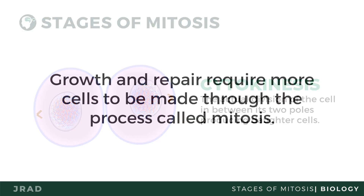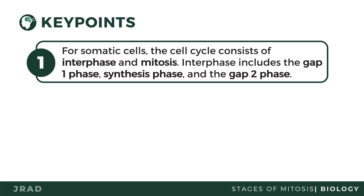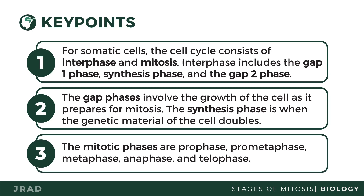Understanding mitosis means understanding how growth and repair happen, because these processes require more cells to be made. For somatic cells, the cell cycle consists of interphase and mitosis. Interphase includes the G1 phase, Synthesis phase, and G2 phase. The G phases involve cell growth in preparation for mitosis; the S phase is when genetic material doubles. The mitotic phases are Prophase, Metaphase, Anaphase, and Telophase.